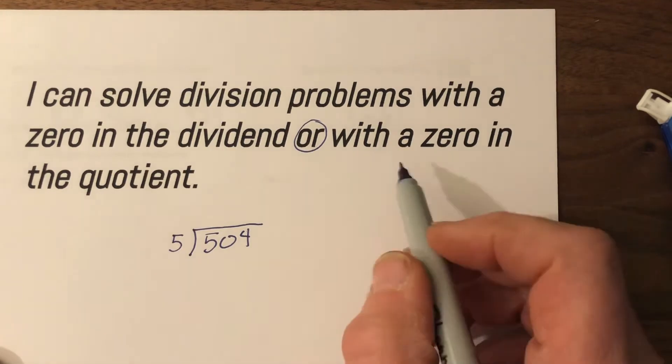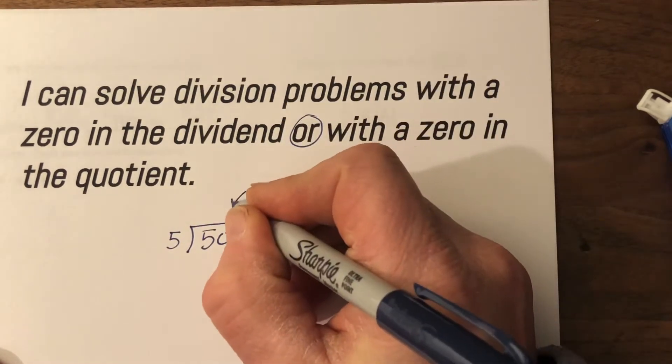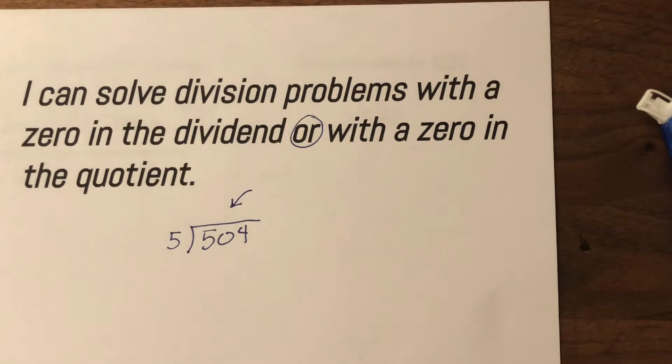We're also going to learn how to do a zero in the quotient, which is the up top here is where our answer goes. Have that zero in the quotient, all right?